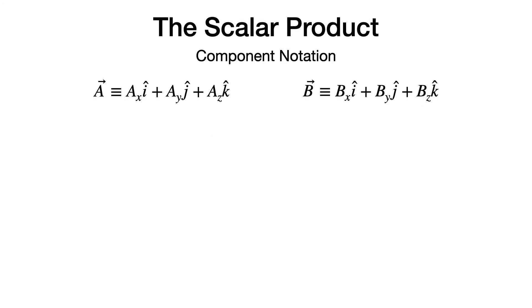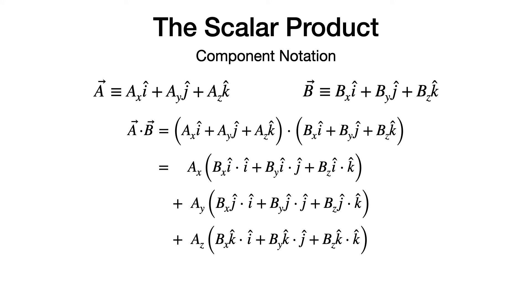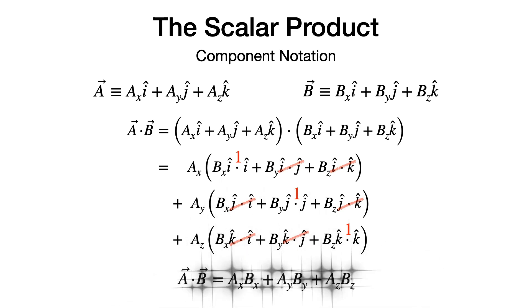Finally, we can express the dot product in component notation. If I have two vectors a and b expressed in terms of their components, then a dot b can be written out explicitly by expanding each vector in terms of its components and unit vectors. Multiplying this out gives nine terms. All terms where one unit vector multiplies a different unit vector vanish because that dot product is zero, while the dot product of a unit vector with itself is one. So the scalar product of a and b is simply the product of their x-components plus the product of their y-components plus the product of their z-components.